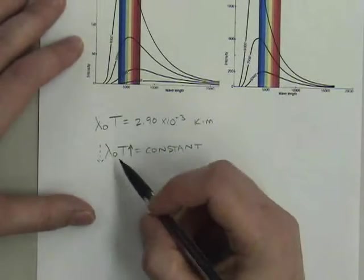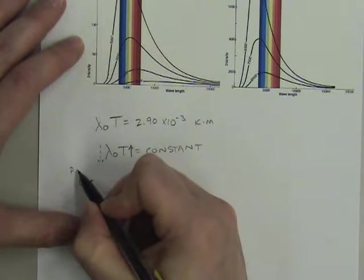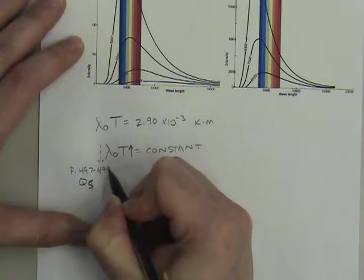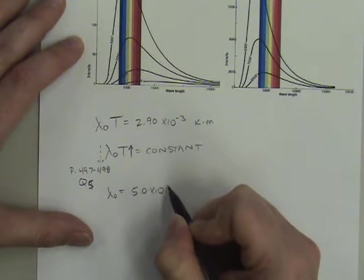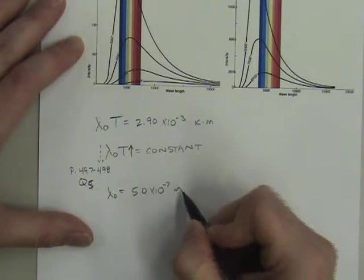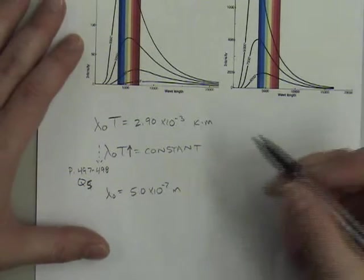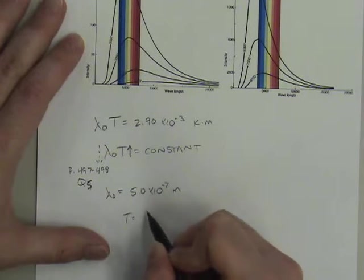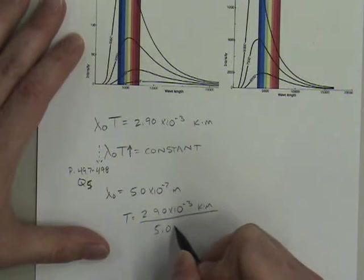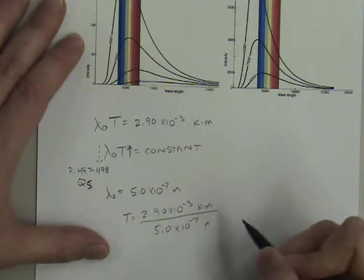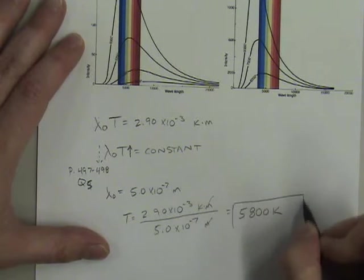Okay? So, for example, we know the peak wavelength, and this is example question 5 on page 497 to 498, we know that the peak wavelength for the sun is about 5.0 times 10 to the minus 7 meters. And so then this would allow us to calculate the temperature. So in this case, T would be equal to 2.90 times 10 to the minus 3 Kelvin meters, divided by 5.0 times 10 to the minus 7 meters. The meters will cancel. And we end up with a temperature of 5,800 K. And that's the temperature of our sun.